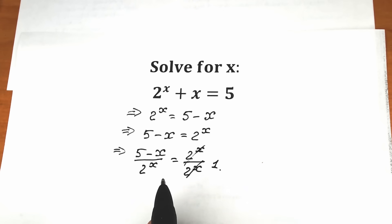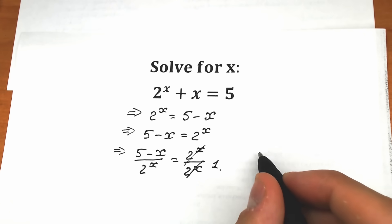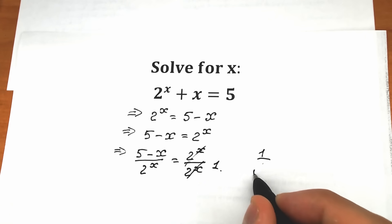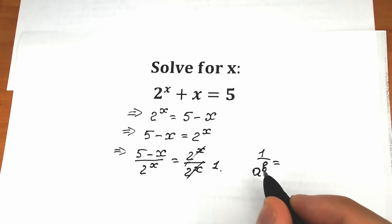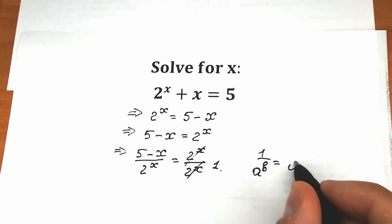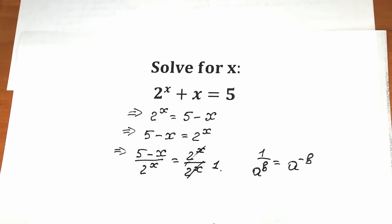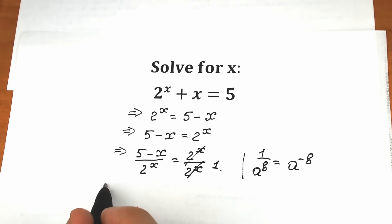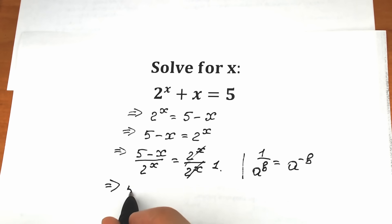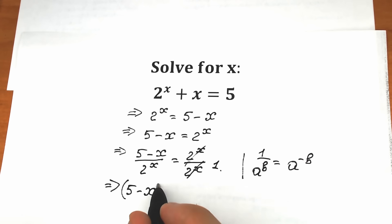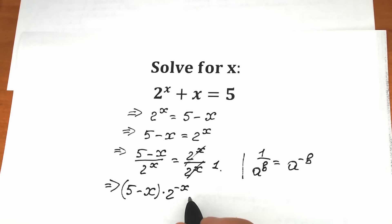I hope you know this property: if we have 1 over a to the power b, when we bring it to the numerator we change the sign, so it becomes a to the power minus b. Applying this property, we get 5 minus x times 2 to the power minus x equal to 1.